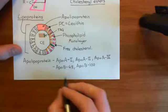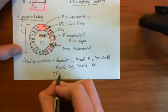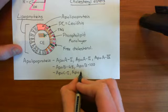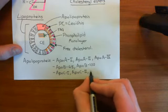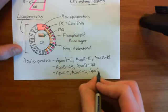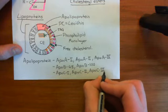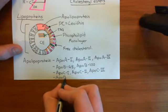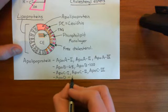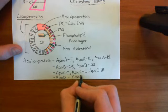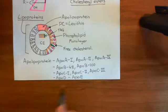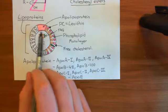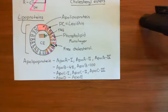Then we've got three apolipoprotein C's: ApoC1, ApoC2, and ApoC3. And finally we've also got apolipoprotein D (ApoD) and apolipoprotein E (ApoE). These are all of the different apolipoproteins which can be embedded in the phospholipid monolayers of lipoproteins.